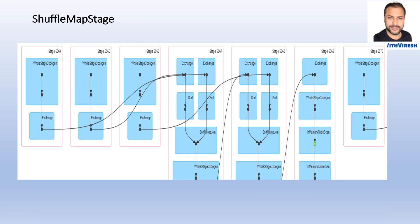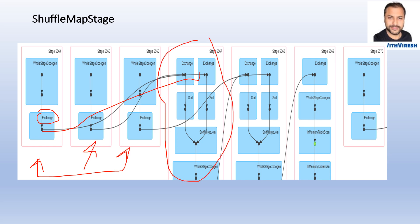This is a snippet from the Spark UI showing different stages created for a particular job. You can see the exchange — that's how data flows between stages. One stage is taking data from three previous dependent stages, and the output from that stage flows into the next stage. That's how the entire stage dependency is maintained.